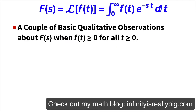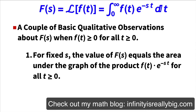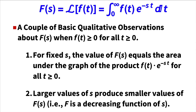Let's review a couple of basic qualitative observations from video one when f(t) is non-negative for all non-negative t. First, for any fixed s, F(s) equals the area under the graph of the product f(t) times e^(−st). Second, larger values of s produce faster exponential decay in e^(−st), giving a smaller area and therefore smaller values of F(s). In other words, capital F is a decreasing function of s.